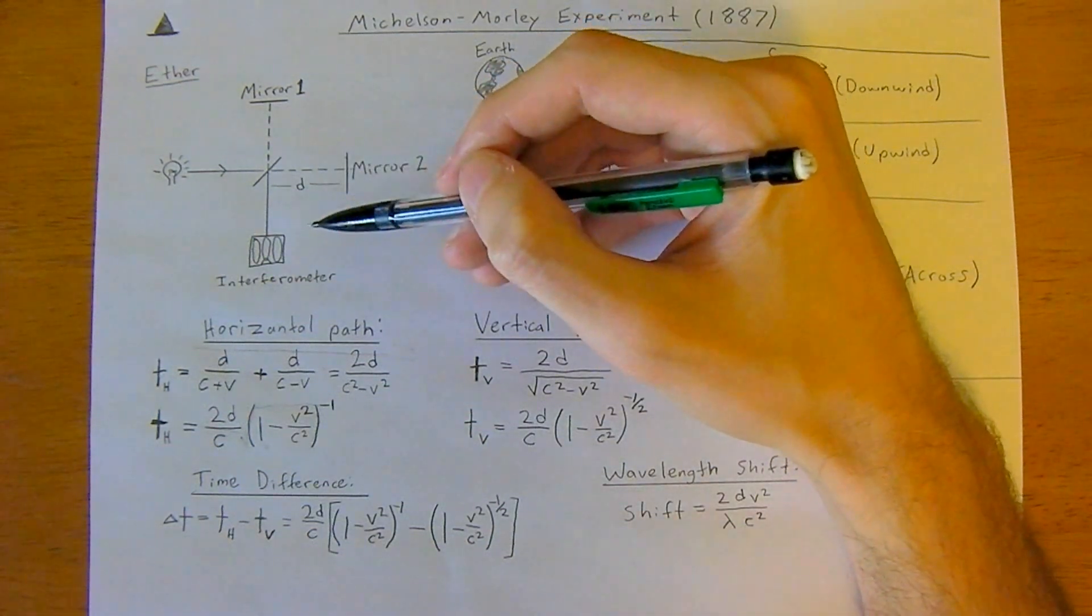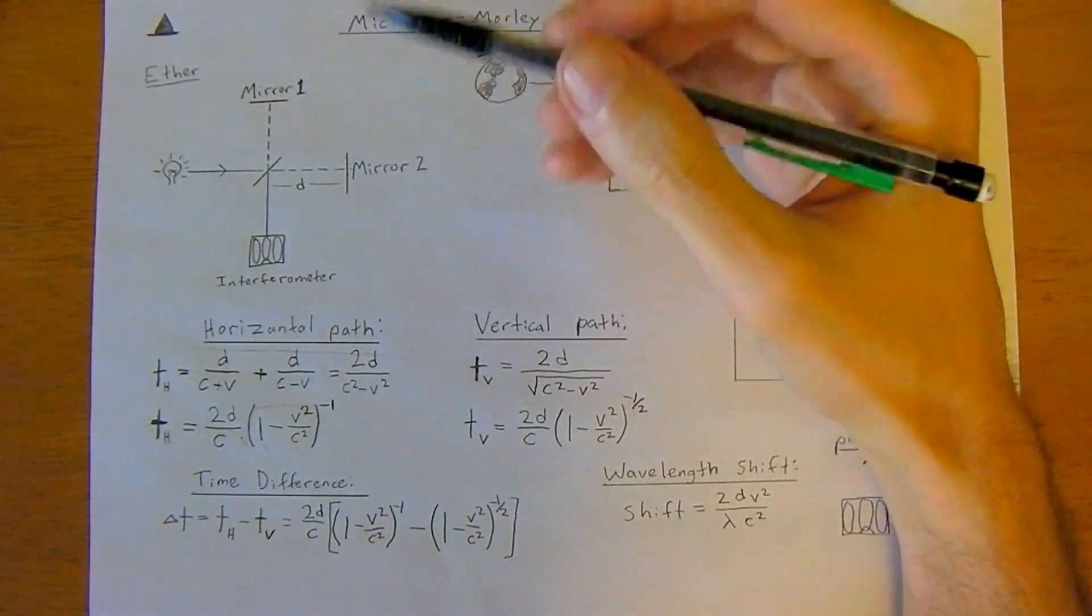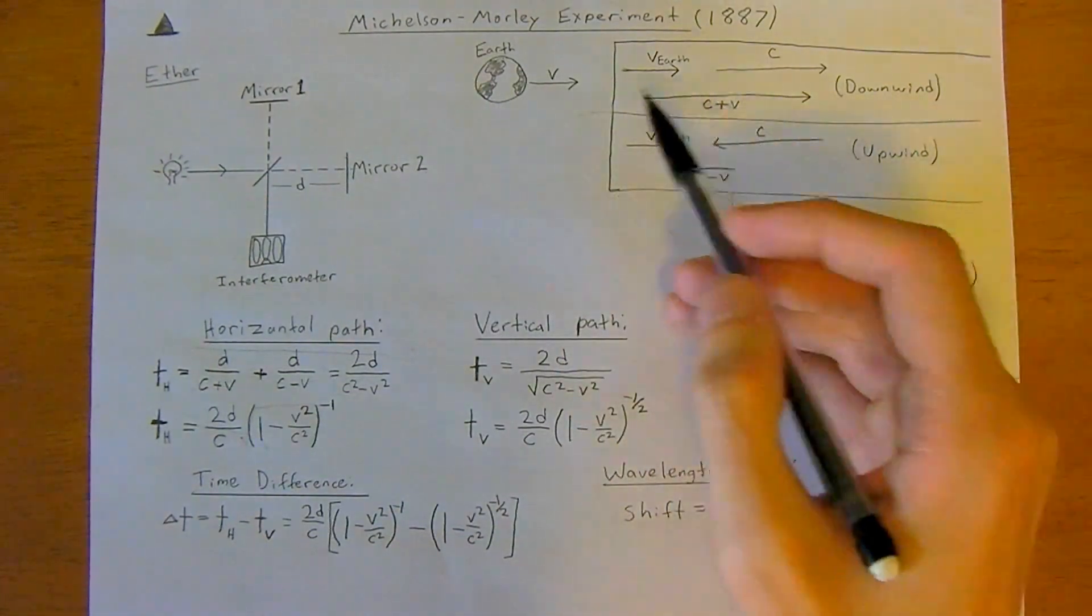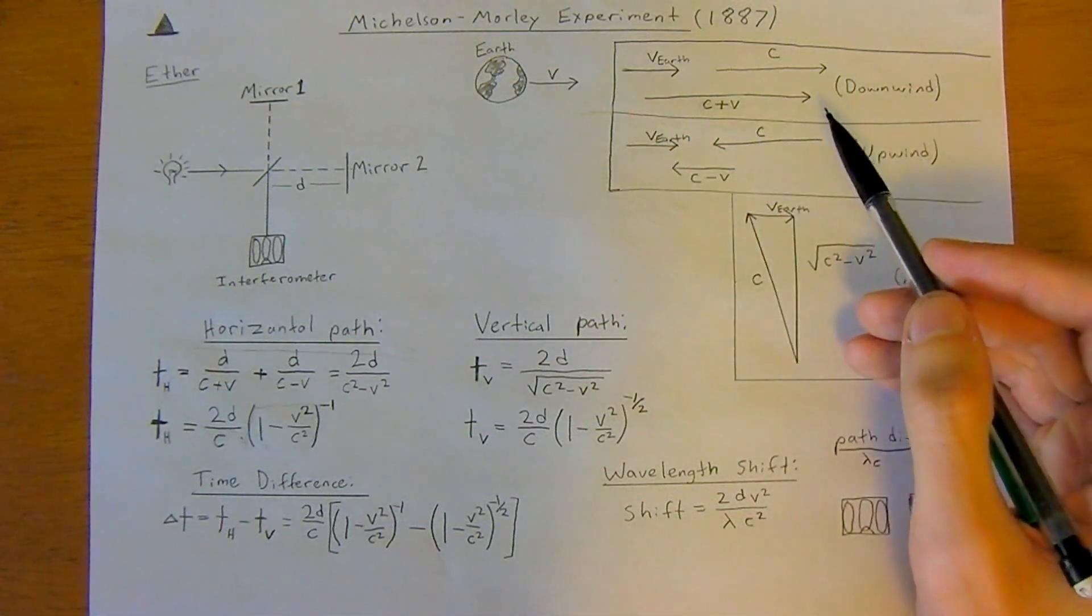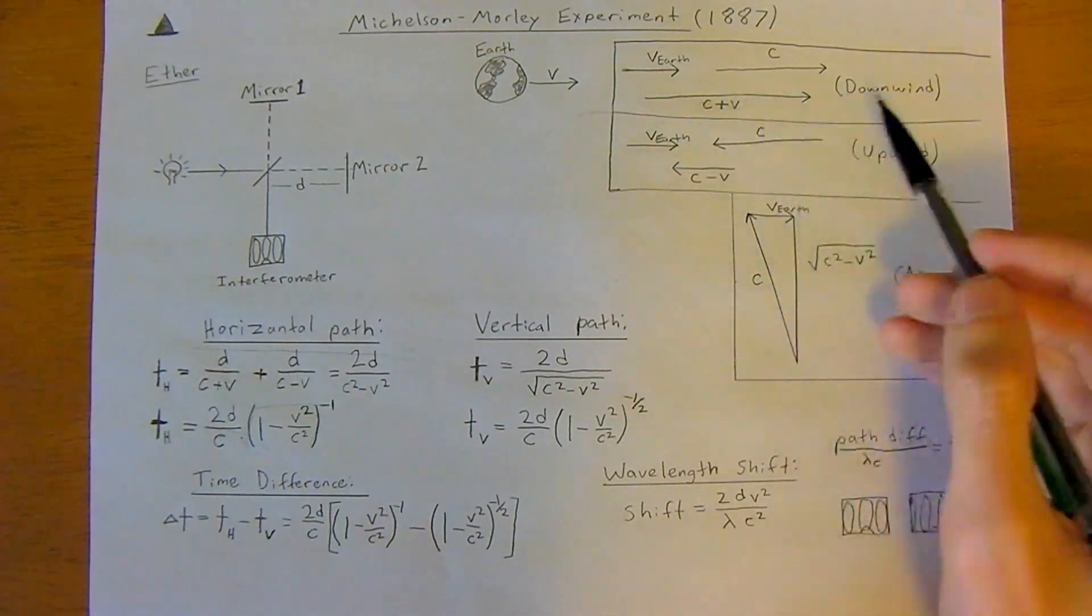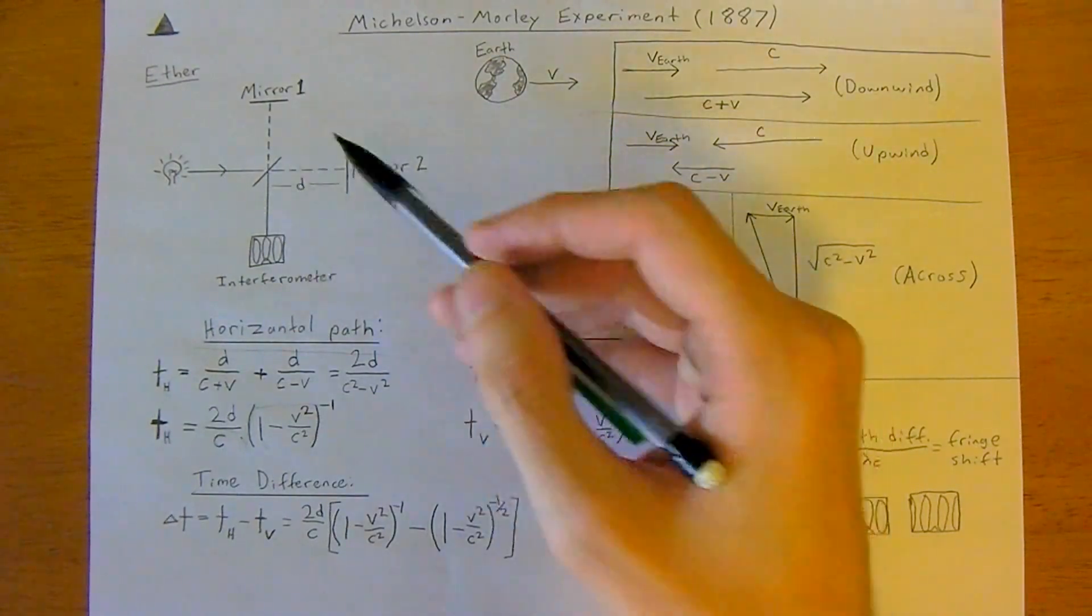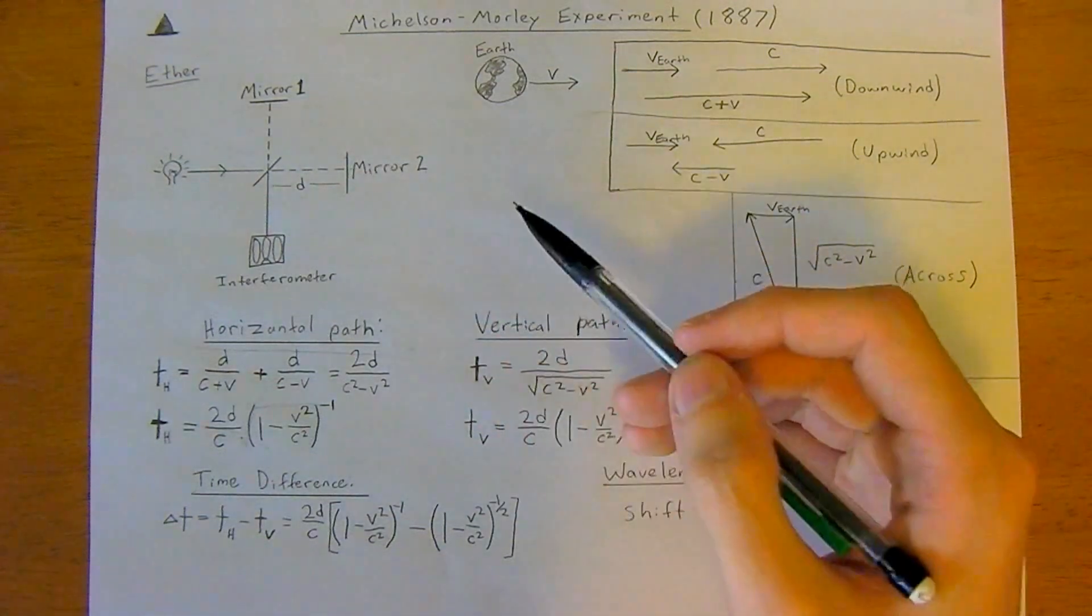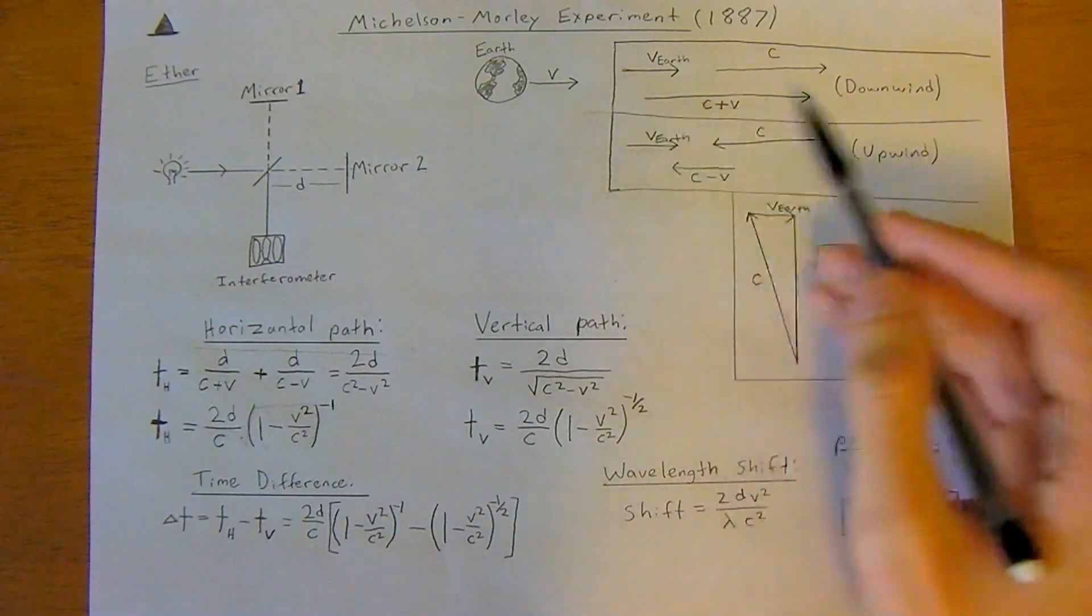If they come back at a slightly different time, then that'll change the interference pattern. What they did is, essentially, ether theory said that the earth was moving through space with a velocity and that the speed of light they thought wasn't constant everywhere. The speed of light—this experiment was set up to determine if this was the case. They thought that the speed of light should change, but that wasn't true.